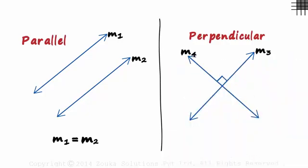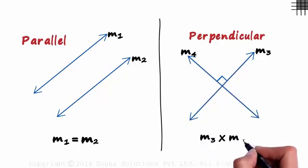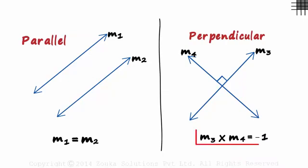This may not be obvious but the product of their slopes is minus 1. M3 times M4 is equal to minus 1. Another fancy way to say it would be that they are negative reciprocals of each other. M3 will equal minus 1 over M4, and M4 will equal minus 1 over M3.